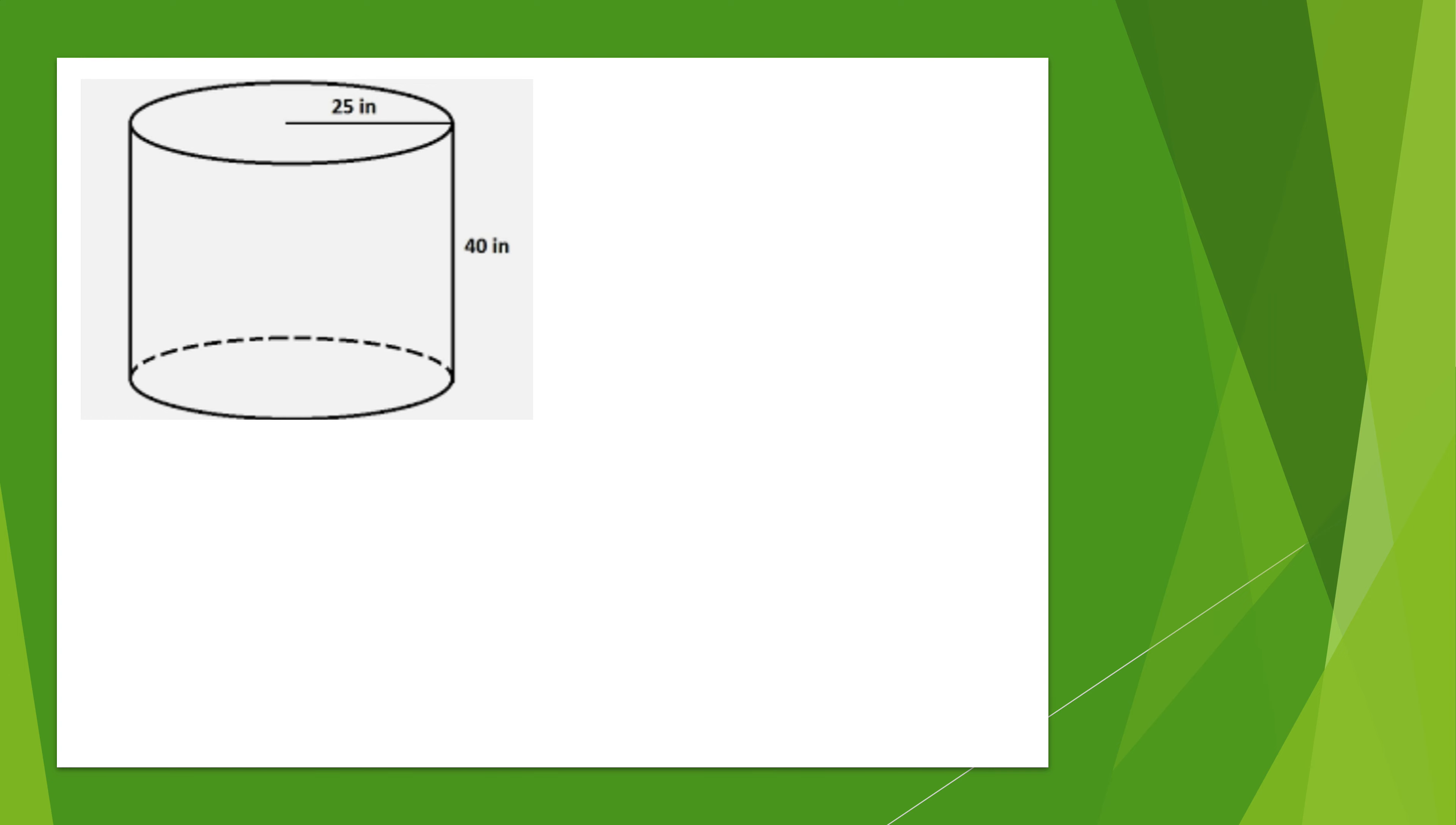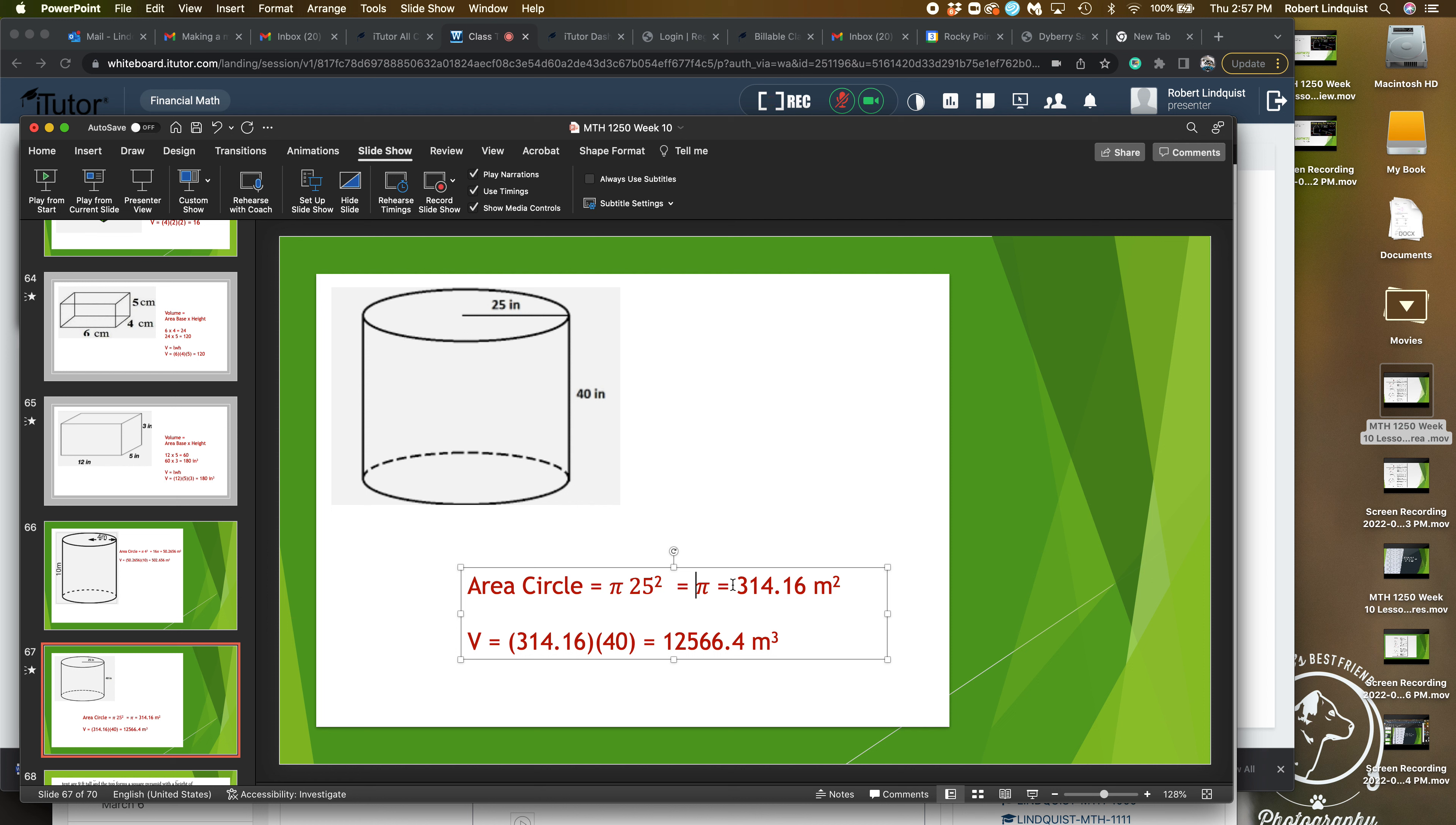You try this cylinder. In this case, the area of the base is going to be pi r squared, which is pi times 25 squared, which is... 25 squared is 625. I know that right off the top of my head. So 3.1416 times 625 will get me 1963.5. And then I have to do that times 40.